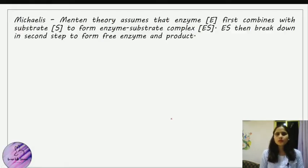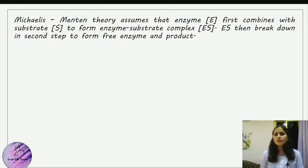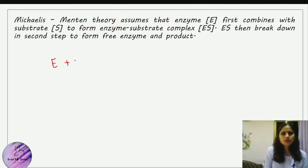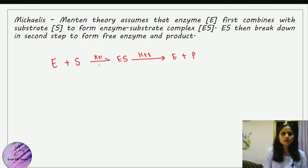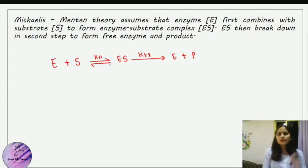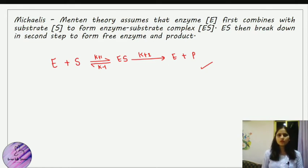Starting with the principle: Michaelis-Menten theory assumes that an enzyme first combines with the substrate to form an enzyme-substrate complex, which further breaks down to form free enzyme and product. The simple Michaelis-Menten equation is: E + S → ES (at rate k+1); ES → E + P (at rate k+2). The ES complex can also revert back to E + S at rate k−1.